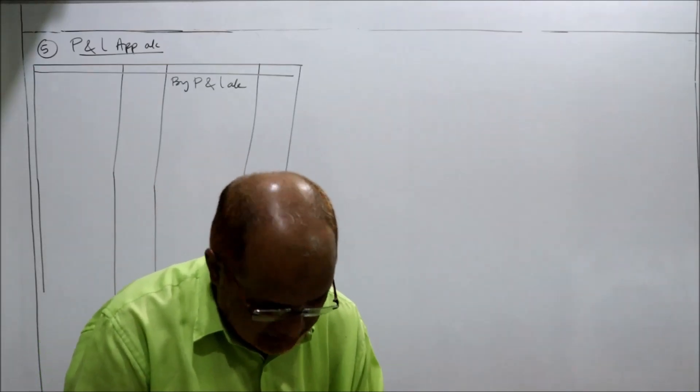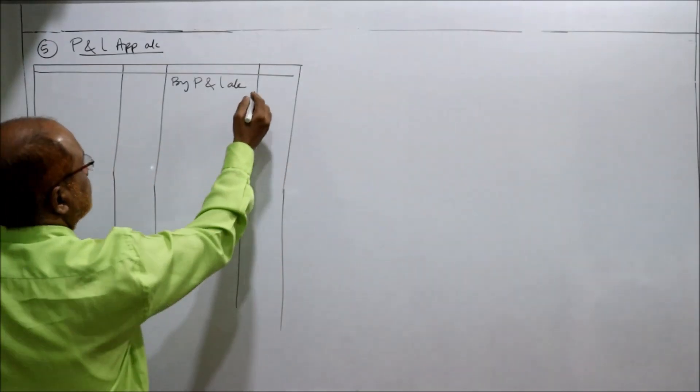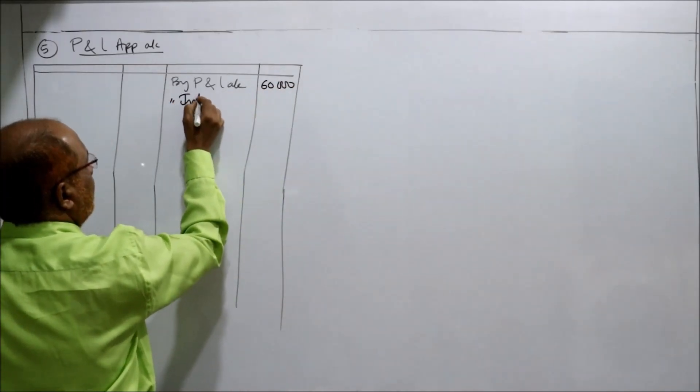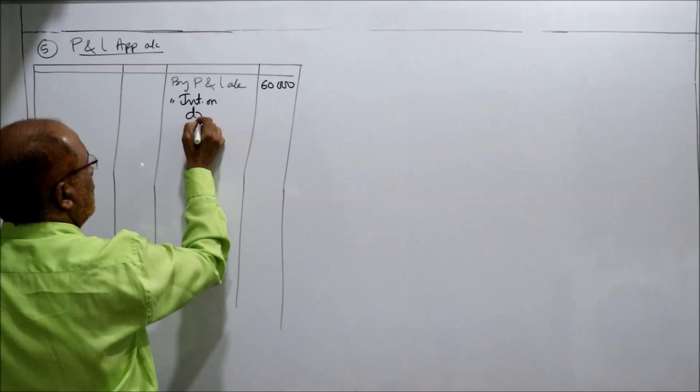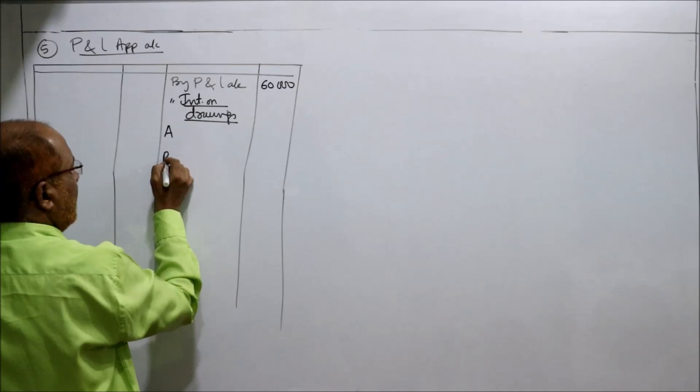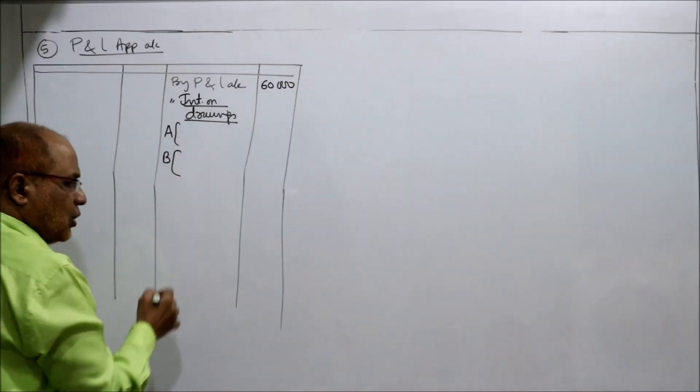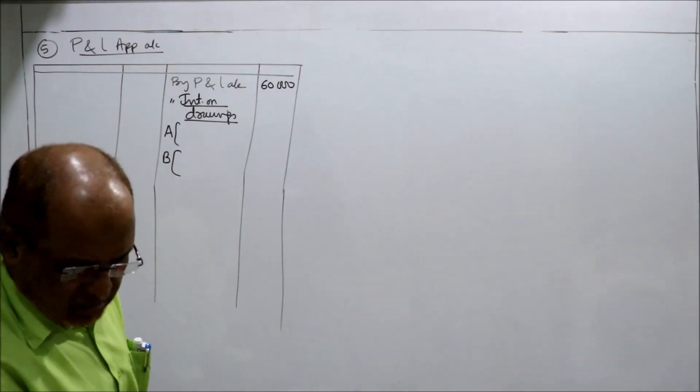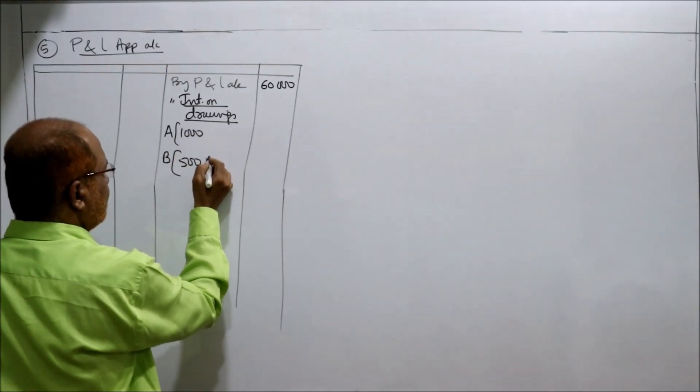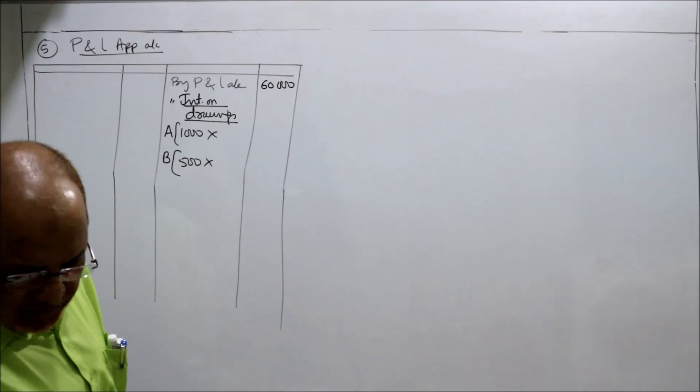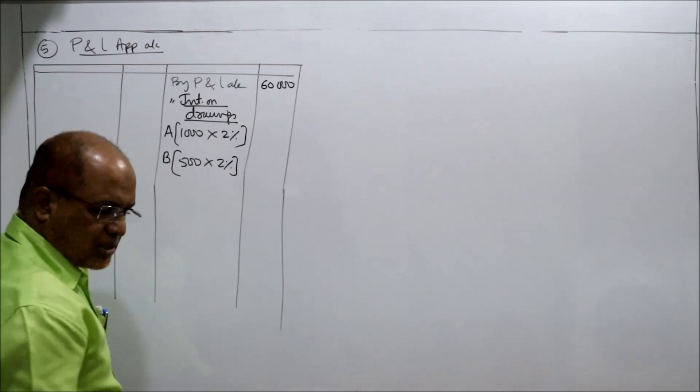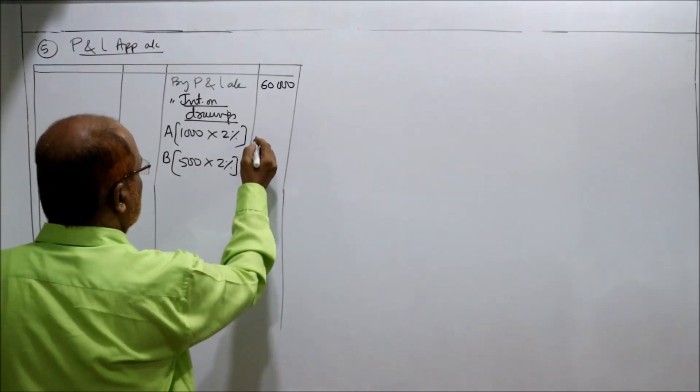How much is the profit? Before making an adjustment, $60,000. By interest on drawings, that is author and book. The drawings made by the partners are $1,500. The rate of interest is 2%. So it comes to 20 rupees and 10 rupees.